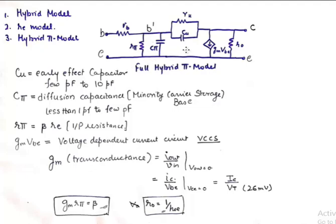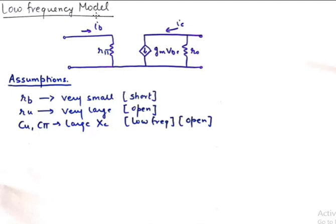Now we will look into the conversion of this full hybrid pi model into an approximate hybrid pi model which is more suitable for low frequency operations. Assumptions that we take for low frequency model is that the value of RB is very small. So we short this RB which was featured here. So that has gone and we short this path and the value of R u is very large. So keeping R u very large will result in an open circuit here. R u was featured here and C u was featured here. At very low frequency the value of capacitive reactance for C u and C pi will be very very large. So we open circuit these capacitors which were otherwise featuring here and here.